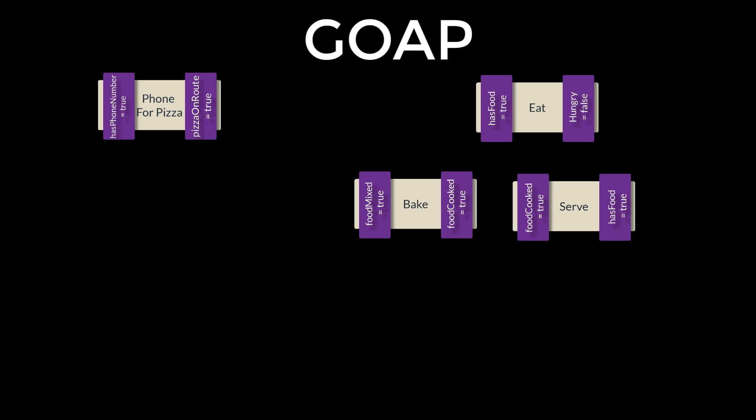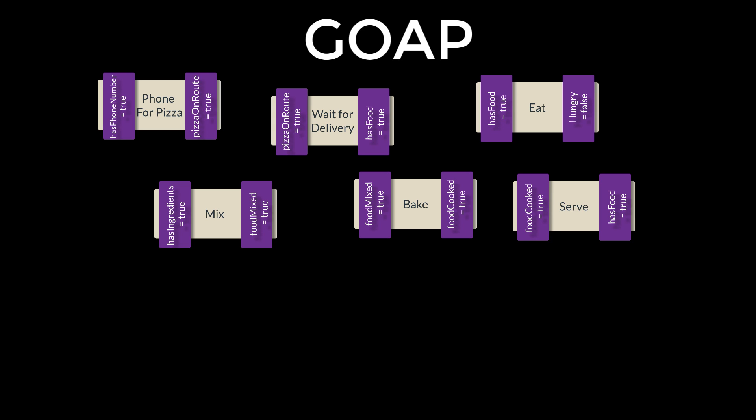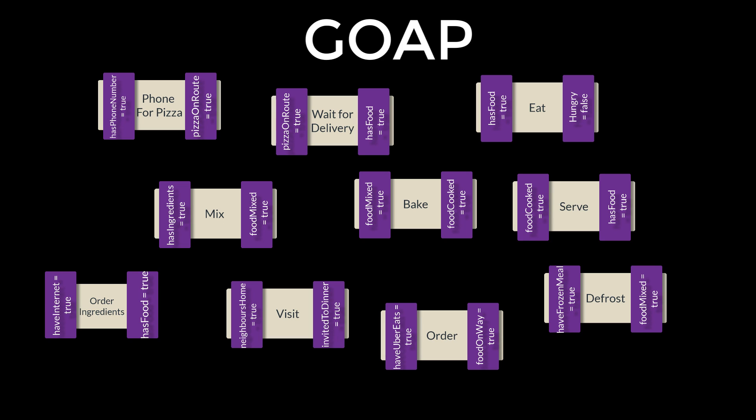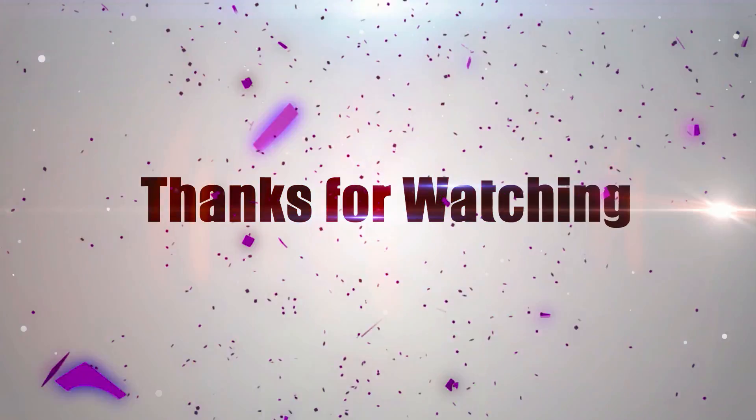The beauty of GOAP is that more and more actions can be added to the pool available to the agent, and these will automatically be picked up by the planner. This means very little extra programming to recognise graphs like those in complete setups of finite state machines, as the graphs are generated on the fly by the planner. This makes GOAP a very powerful and flexible option for programming the behaviours of your NPCs.